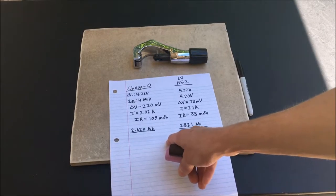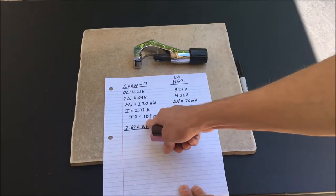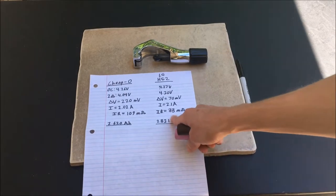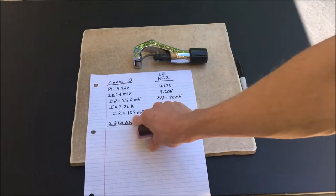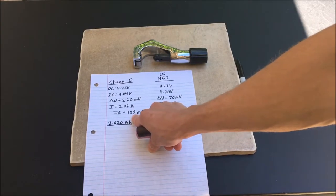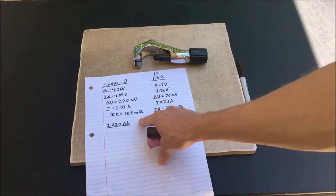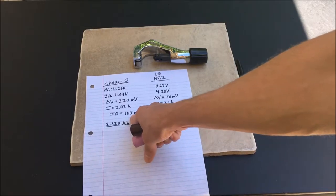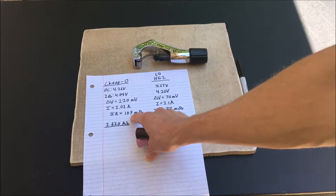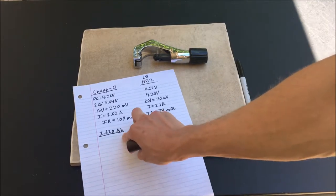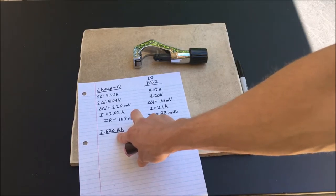What makes the big difference though in actual performance in a high demand application is the internal resistance of the cells. Whereas the LG HG2 is showing an internal resistance of 33 milliohms, the cheap cell actually had almost three times that. As a result, even though they may have similar energy capacity, this one had much lower amperage output capabilities, and because of this internal resistance under high demand, it would tend to show considerably less than the full rated or full discharged capacity.